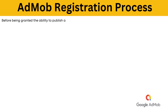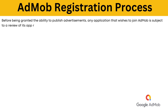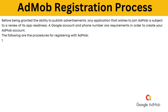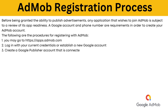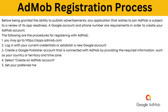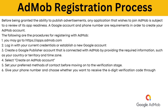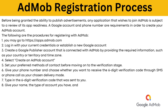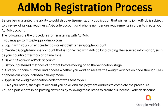AdMob registration process: before being granted the ability to publish advertisements, any application that wishes to join AdMob is subject to a review of its app's readiness. A Google account and phone number are required to create your AdMob account. You may go to apps.admob.com, log in with your current credentials or establish a new Google account, create a Google publisher account connected with AdMob by providing required information such as your country and time zone, select create an AdMob account, give your phone number and choose whether to receive the six-digit verification code via SMS or phone call, type in the verification code, then give your name, account type, and payment address to complete the procedure.